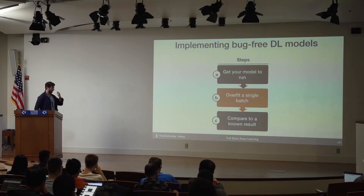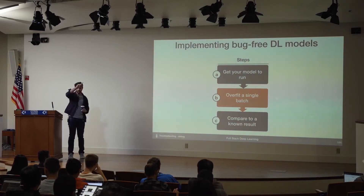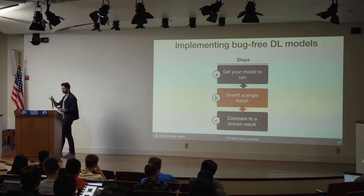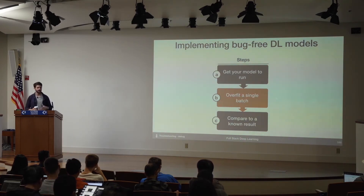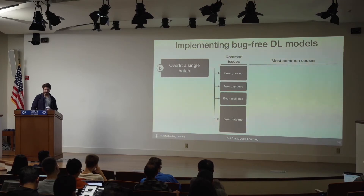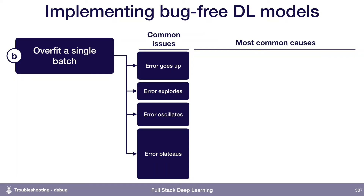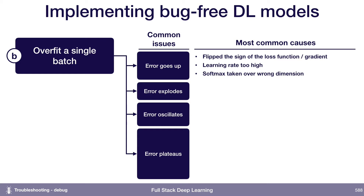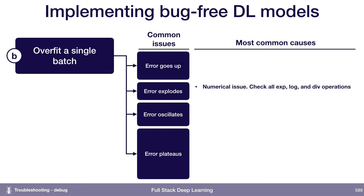What I mean by overfitting a single batch is that you want to be able to drive your training error arbitrarily close to zero. If you get your training error down to 0.01 and it plateaus, that doesn't count — you want to see it go as close as you want to zero. If the error goes up, this is commonly due to a flipped sign, like minimizing instead of maximizing log probability. If the error explodes, that's usually a numerical issue or a high learning rate.